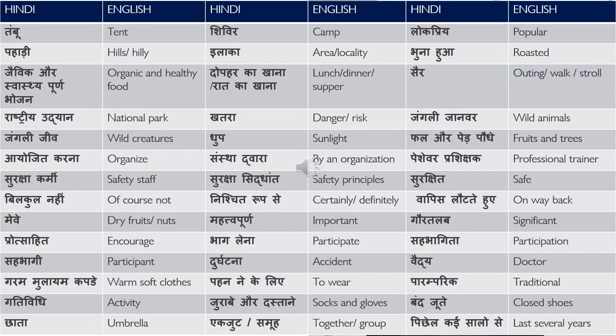ख़तरा — danger or a risk. जंगली जानवर — wild animals. जंगली जीव — wild creatures. There is a small difference between जानवर and जीव. धूप — sunlight. फल और पेड़-पौधे — fruits and trees. आयोजित करना — to organize. संस्था द्वारा — by an organization: शिविर इस संस्था द्वारा आयोजित किया गया है. पेशेवर प्रशिक्षक — professional trainer. सुरक्षाकर्मी — safety staff. सुरक्षासिद्धांत — safety principles. सुरक्षित — safe.